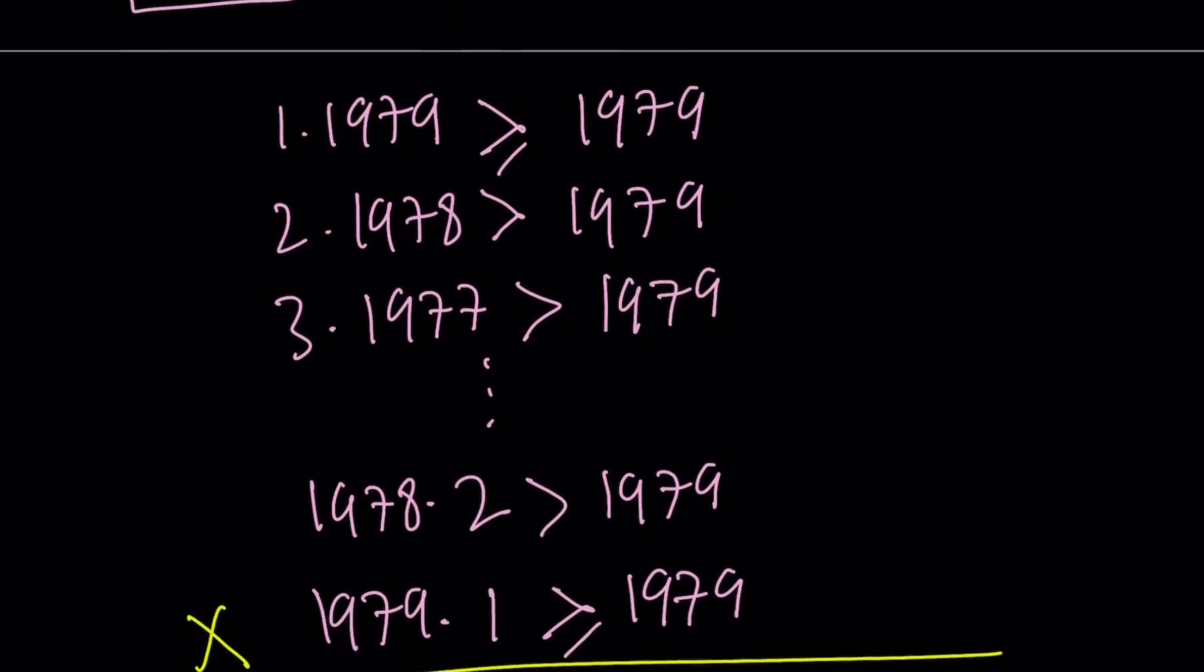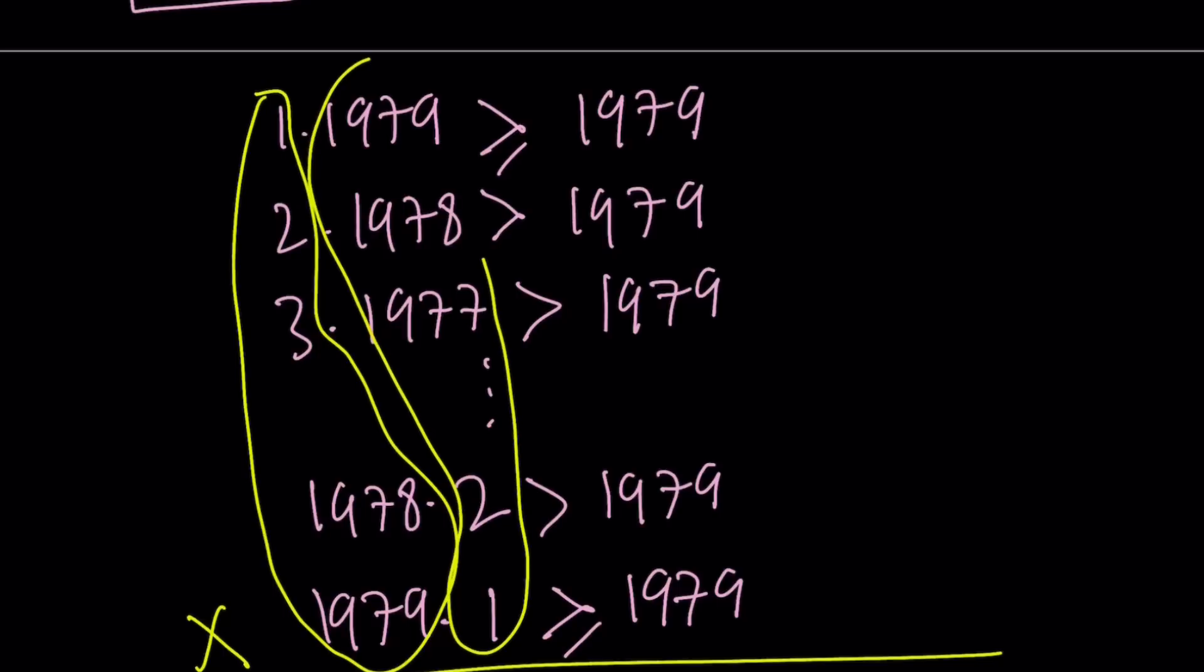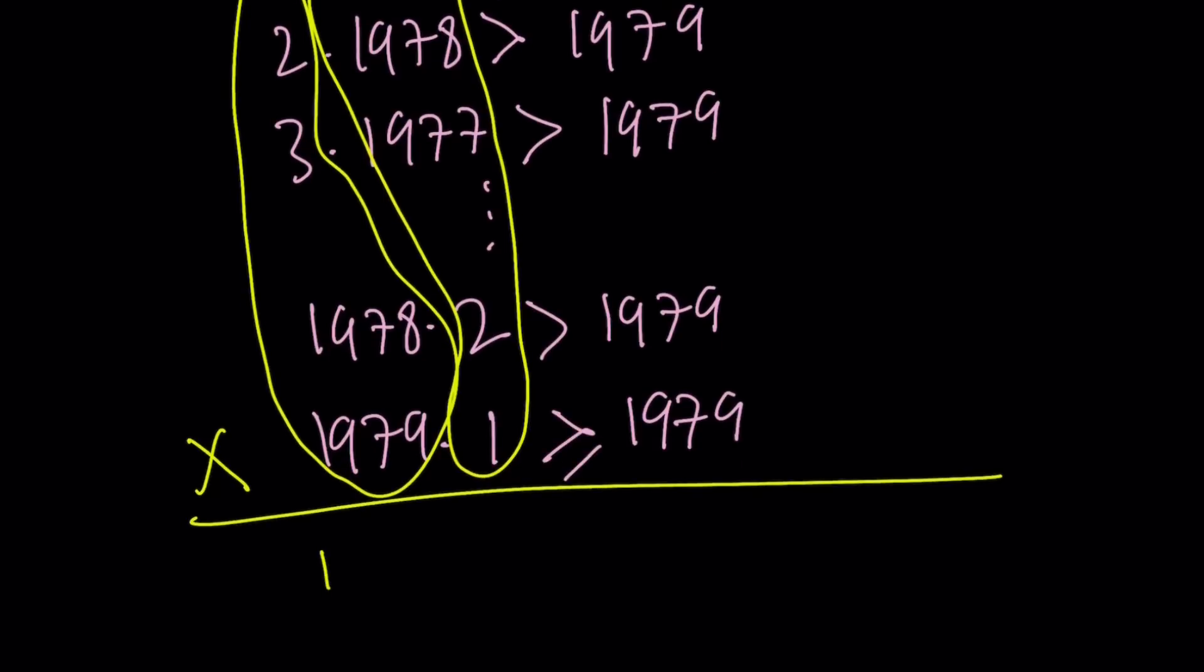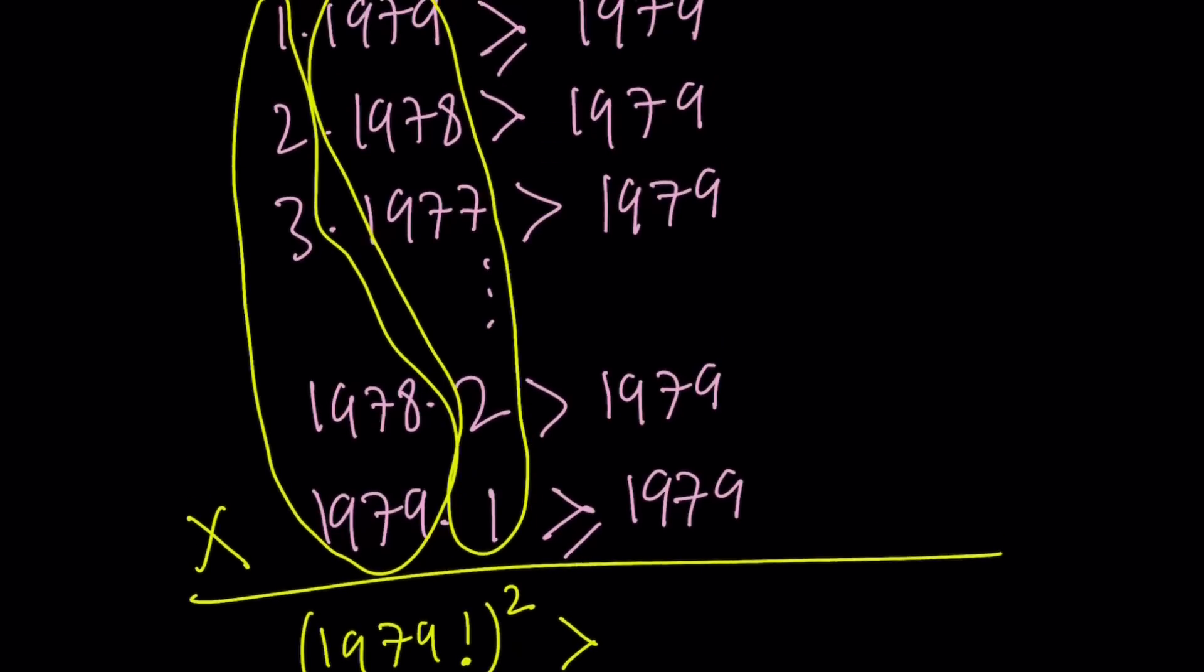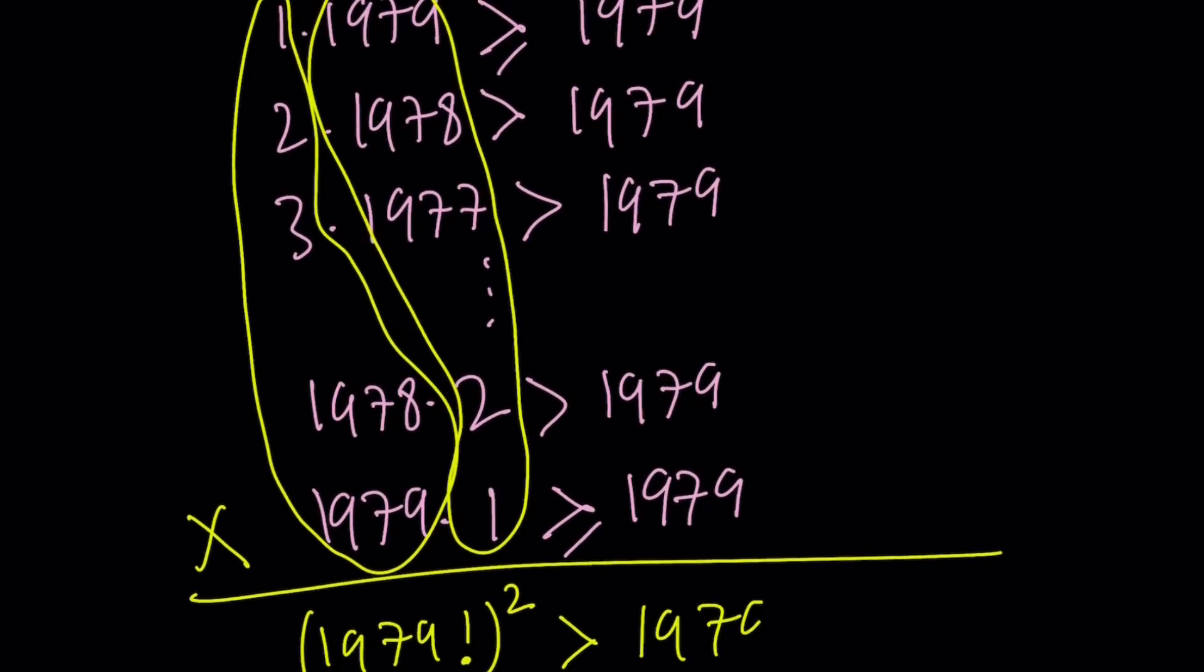If you multiply these numbers, you'll notice this is 1979 factorial times itself, which is 1979 factorial squared. And on the right-hand side, we have 1979 written 1979 times and multiplied.